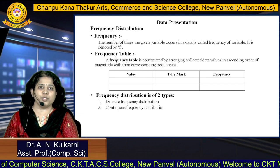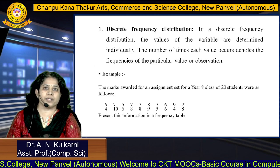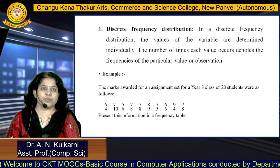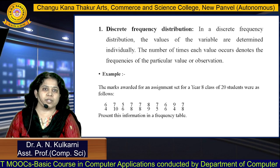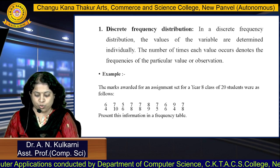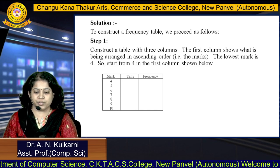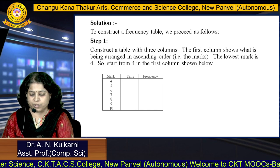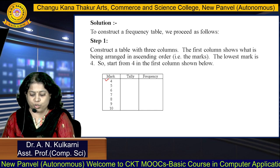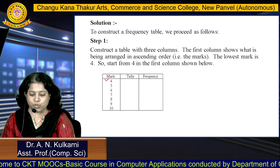Frequency distribution is of two types: discrete frequency distribution and continuous frequency distribution. In a discrete frequency distribution, the values of the variable are determined individually. The number of times each value occurs denotes the frequency of that particular value or observation. Here, marks of 20 students are given and we have to present this information in a frequency table. Construct a table with three columns. The first column shows data items, which are the marks arranged in ascending order: 4, 5, 6, 7 and so on. Tally marks are for representation of data and frequency is for the repetition of data items.